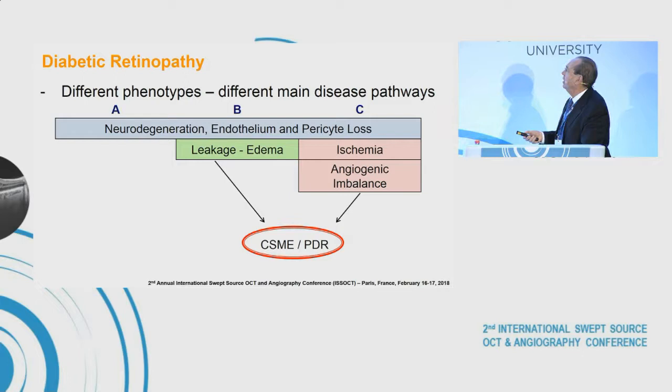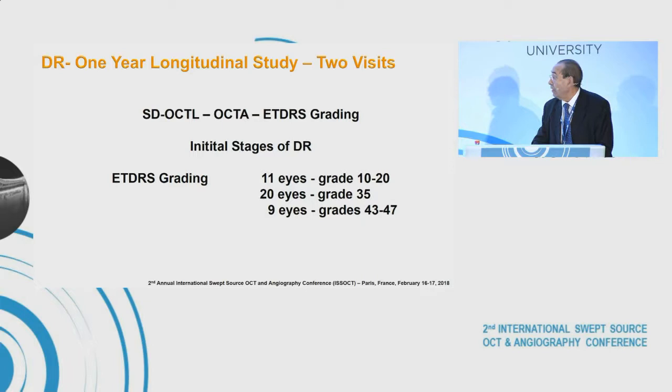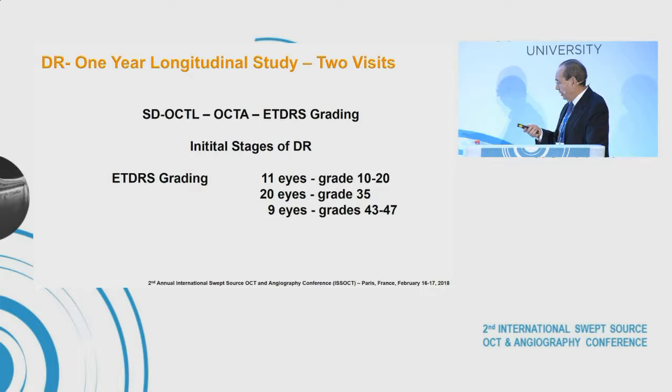There are also many alterations of permeability, and some eyes have developed ischemia. On the basis of this concept, we thought that phenotype A — slow progression — may be associated mainly with cell loss due to hyperglycemia; phenotype B would be associated specifically with edema; and phenotype C mainly with angiogenic imbalance. To explore this, we did a one-year longitudinal study with just two visits at one-year intervals, using OCT leakage, standard spectral domain OCT, and OCTA with Zeiss Angioplex.